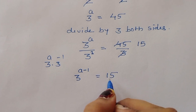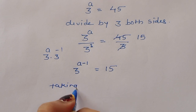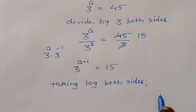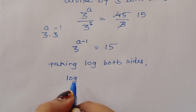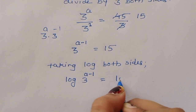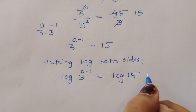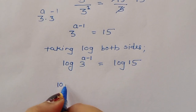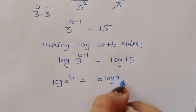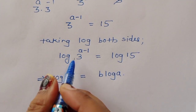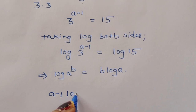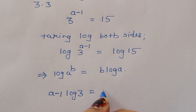Now we are taking log on both sides. We know the formula: log of a power b is equal to b times log of a.